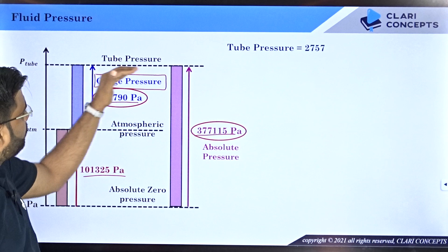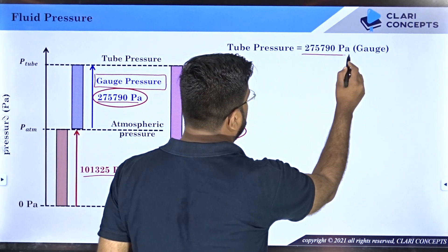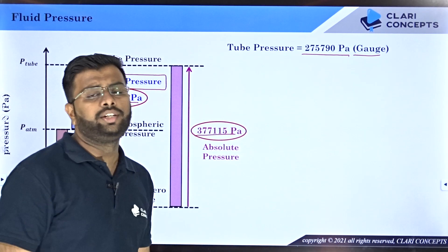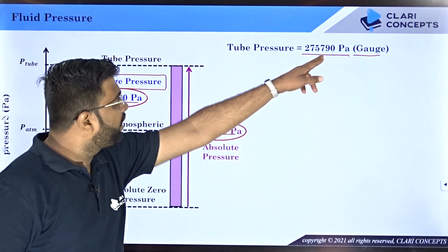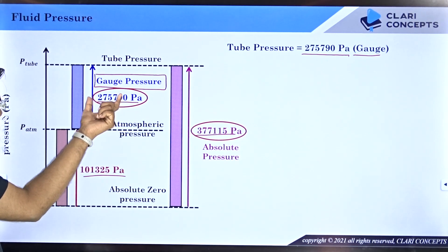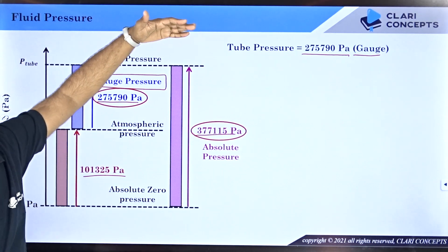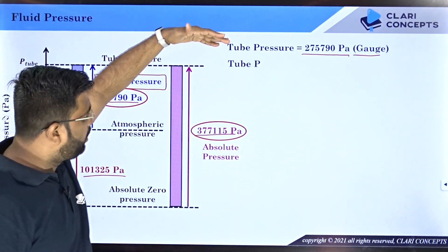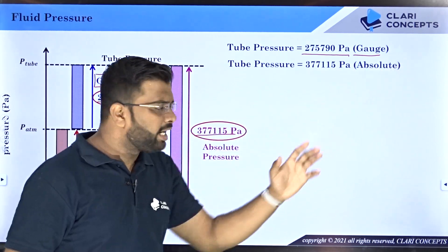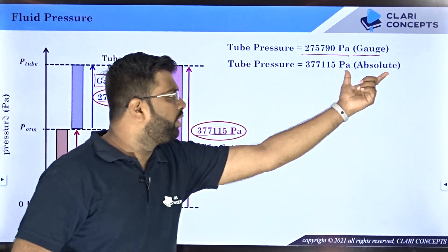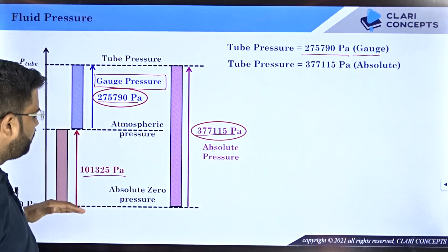If you represent the pressure of any fluid from the absolute 0 pressure line, that is called the absolute pressure. So if I want to represent the tube's pressure, I could write that tube pressure equals 275790 Pascal gauge. That means people can understand this is the pressure inside the tube above atmospheric. And if you want to represent from absolute 0, you can say it is 377115 Pascal absolute, meaning this is the actual pressure of the air filled in the tube from the absolute 0 line.